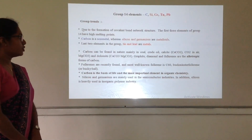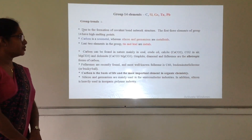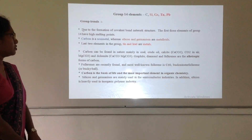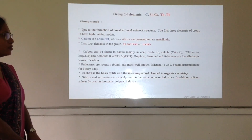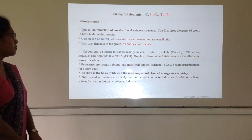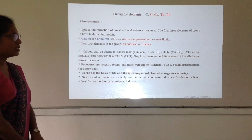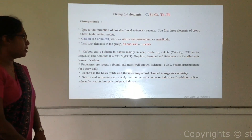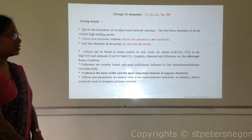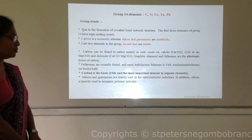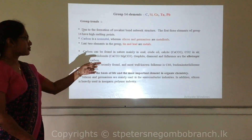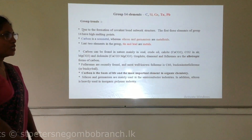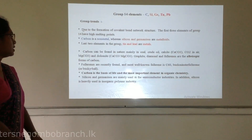Graphite, diamond, and fullerenes are allotropic forms of carbon. There are different kinds of fullerenes, but the most well-known is C60 fullerene. It is called the buckyball, and different fullerenes consist of different numbers of carbon atoms.